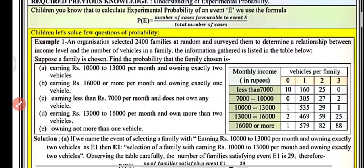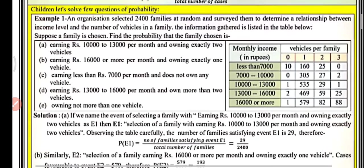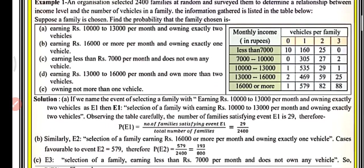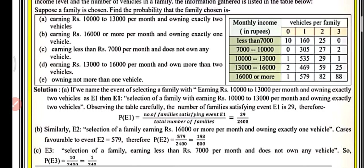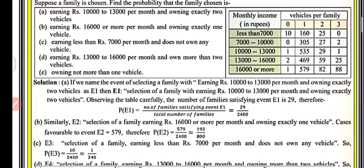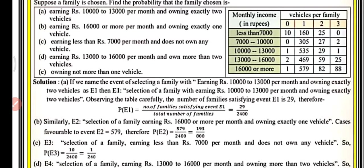Find the probability that the family chosen is earning rupees 10,000 to 13,000 per month and owning exactly two vehicles. So we have to find the probability of this family which is earning 10,000 to 13,000 per month.